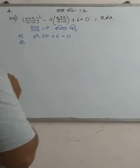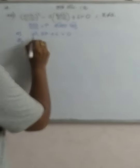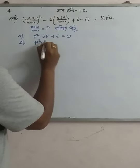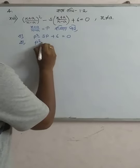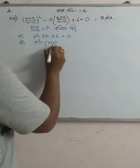So, what happens is p is plus and 6 is plus. So we take a look at p squared minus 5p plus 6 is equal to 0.